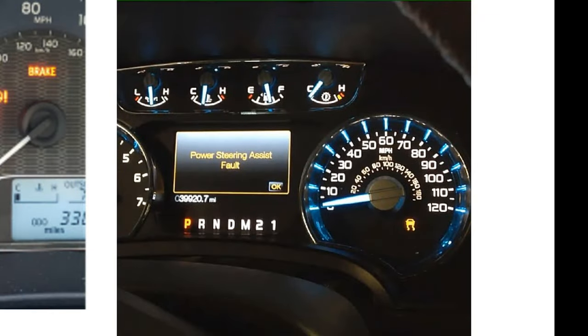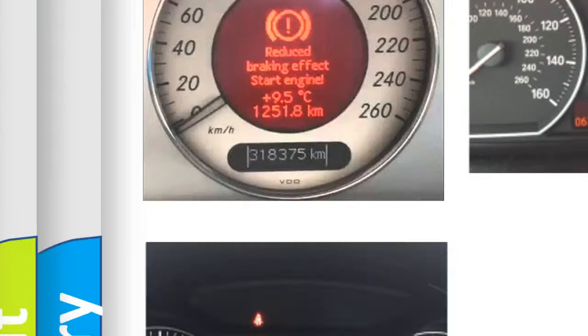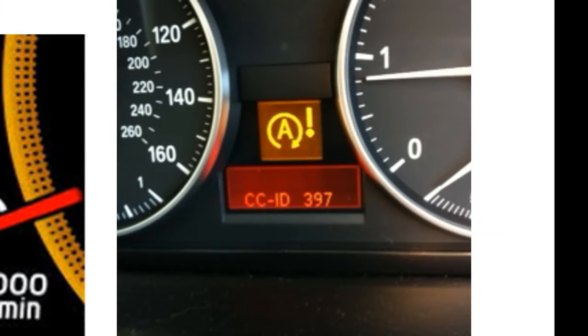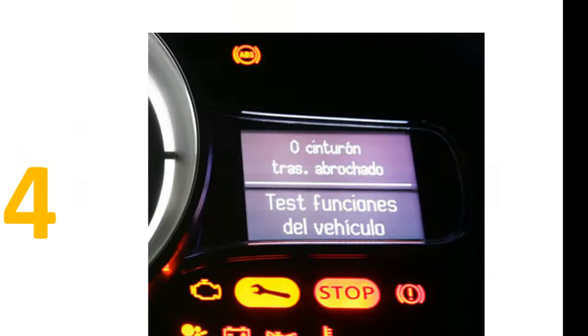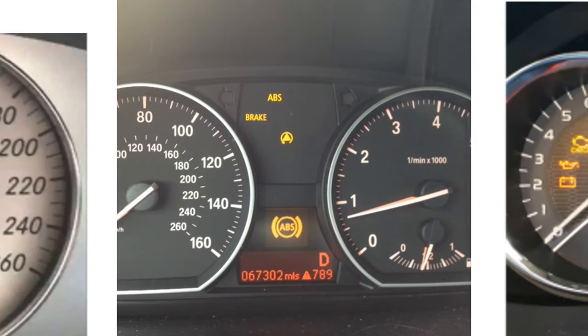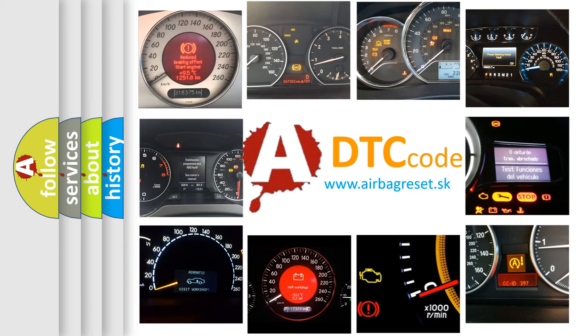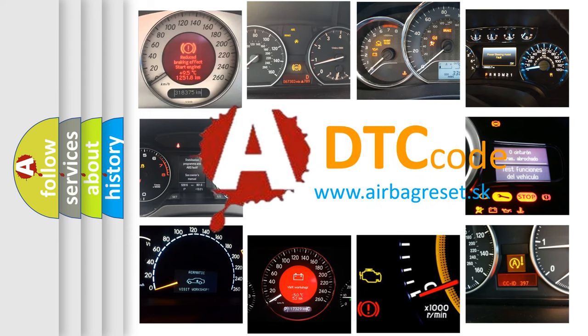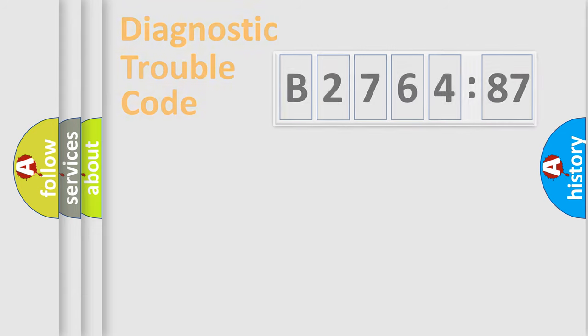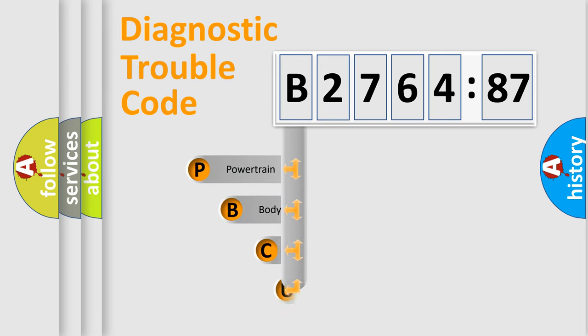Welcome to this video. Are you interested in why your vehicle diagnosis displays B276487? How is the error code interpreted by the vehicle? What does B276487 mean, or how to correct this fault? Today we will find answers to these questions together. Let's do this.